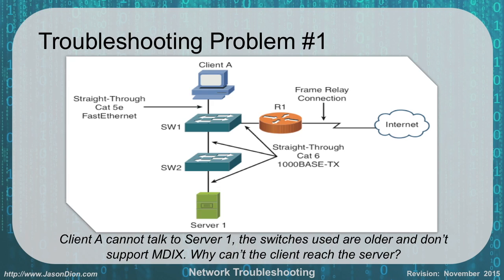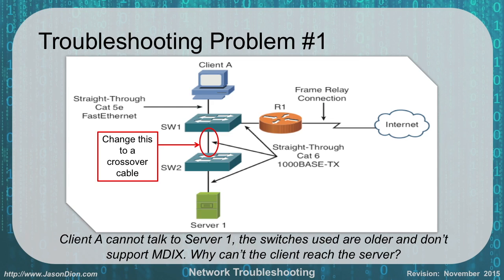Troubleshooting problem 1: Client A can't talk to Server 1. The switches used are older and don't support MDIX. Looking at the topology, all cables shown are straight-through. Since these are older switches without MDIX, going from switch to switch requires a crossover cable. Replacing the switch-to-switch cable with a crossover cable will fix the problem. This is a layer 1/layer 2 problem — simply the wrong cable type.